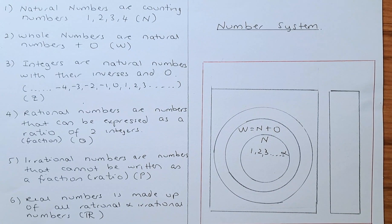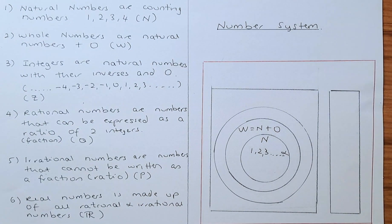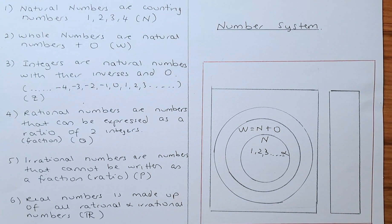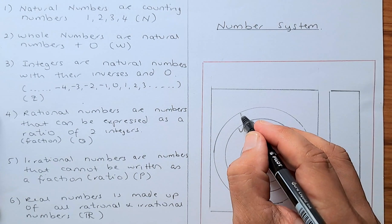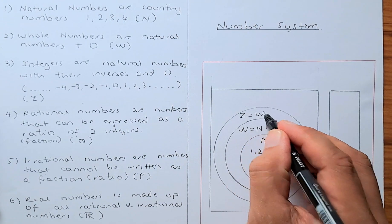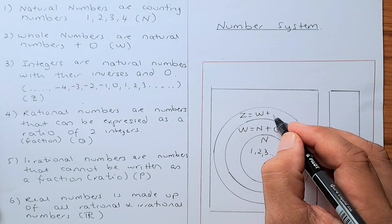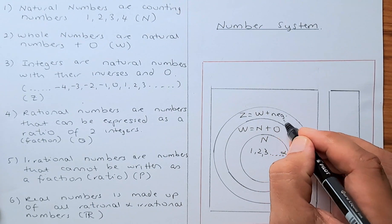The third numbers are integers. What are integers? Integers are natural numbers with their inverses and zero. They're represented by the letter Z. Z equals the integers plus all the negative numbers.